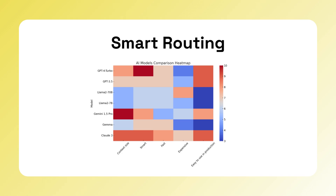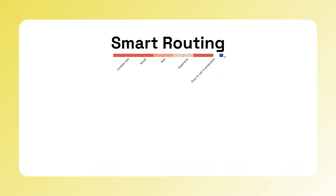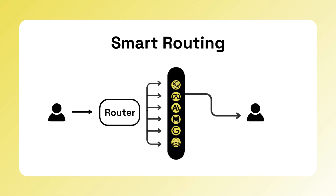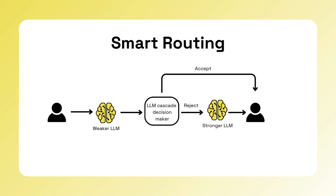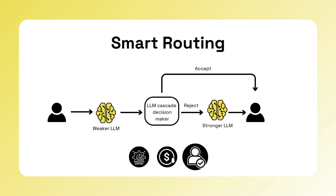First, smart routing. As more models emerge, applications might optimize different models for different tasks — smaller models for chat, specialized models for translations, and more advanced ones to drive complex workflows. An LLM gateway enables the creation of a smart routing layer, disconnected from the application, which can be optimized independently. Techniques like cascading can then be used to improve efficiency, reduce costs, or enhance the user experience.